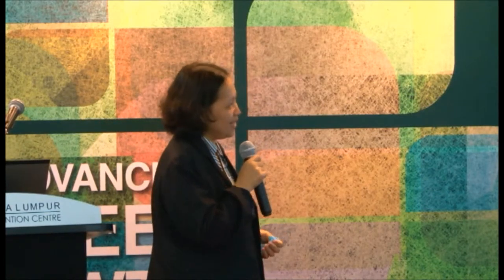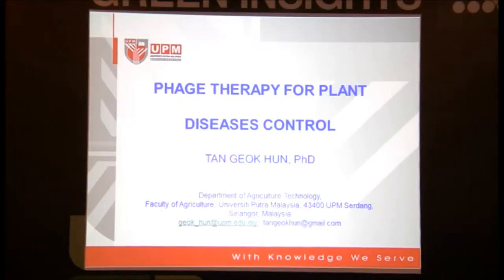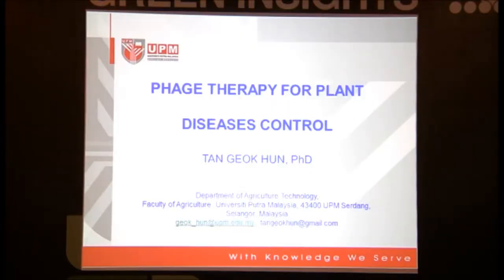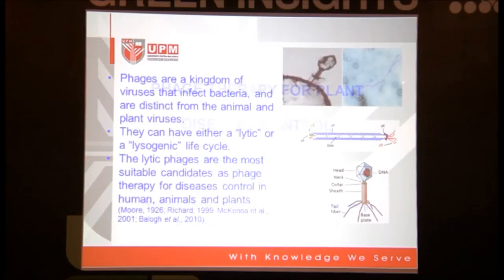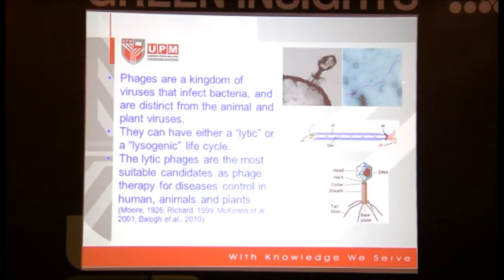Today the topic is phage therapy for plant disease control. I'm not sure if you know what a phage is. Anybody knows about phage? It's one type of virus. Phage is a virus which attacks bacteria, so we call it a bacteriophage. Commonly, it naturally exists in our natural ecosystem.